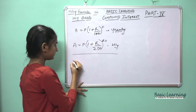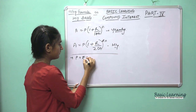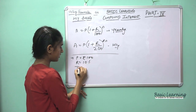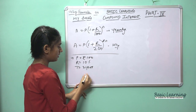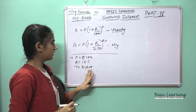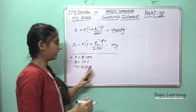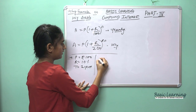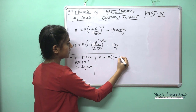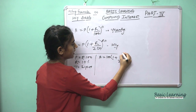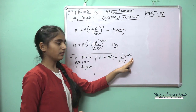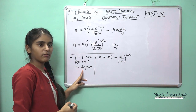I will give you an example. Suppose the principal is Rs. 100, the rate of interest is 10%, and the time duration is 1 year. We apply the formula: A = 100 × (1 + 10/200)^(2×1), since the duration of time is 1 year and we multiply it by 2.